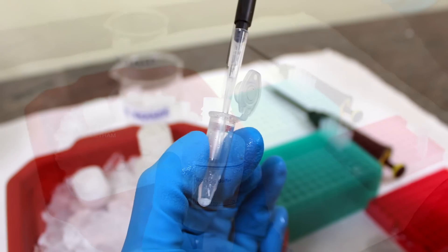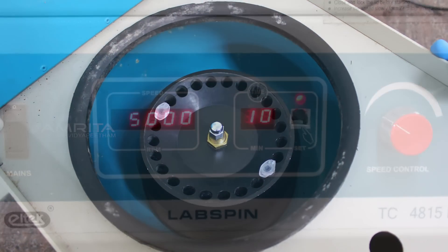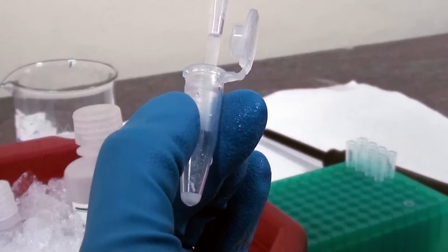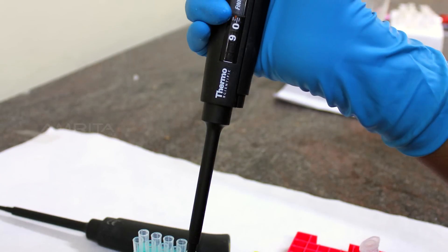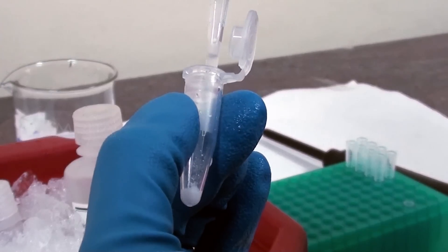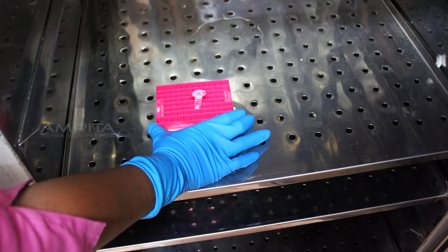Re-suspend the pellet in 1 ml of blocking buffer and spin down at 5000 rpm for 10 minutes. Repeat the washing once more. Add 90 microliters of blocking buffer to the pellet and mix well. Incubate at 4 degrees Celsius overnight.